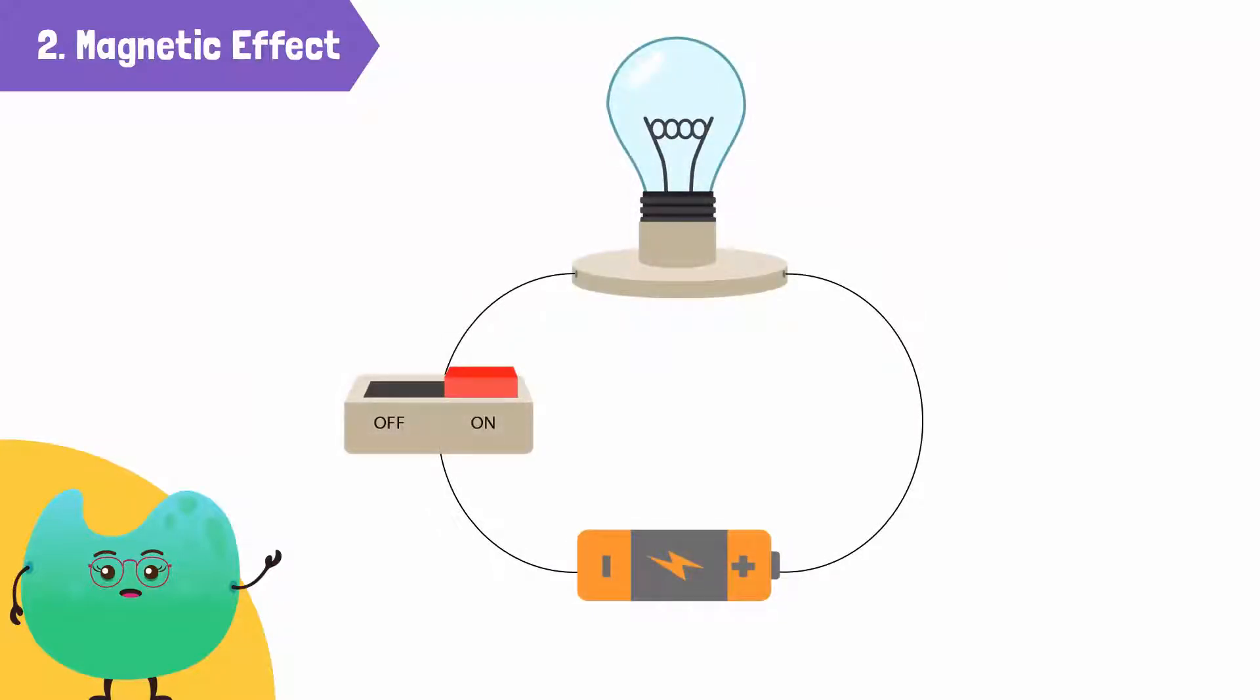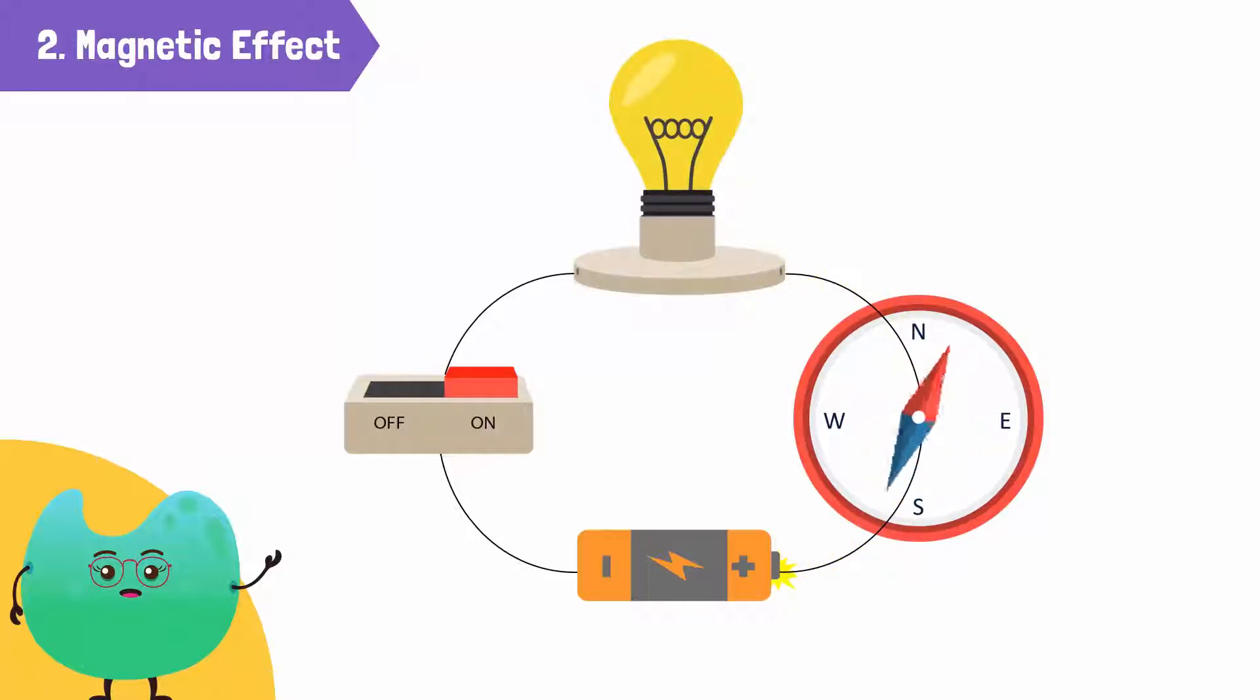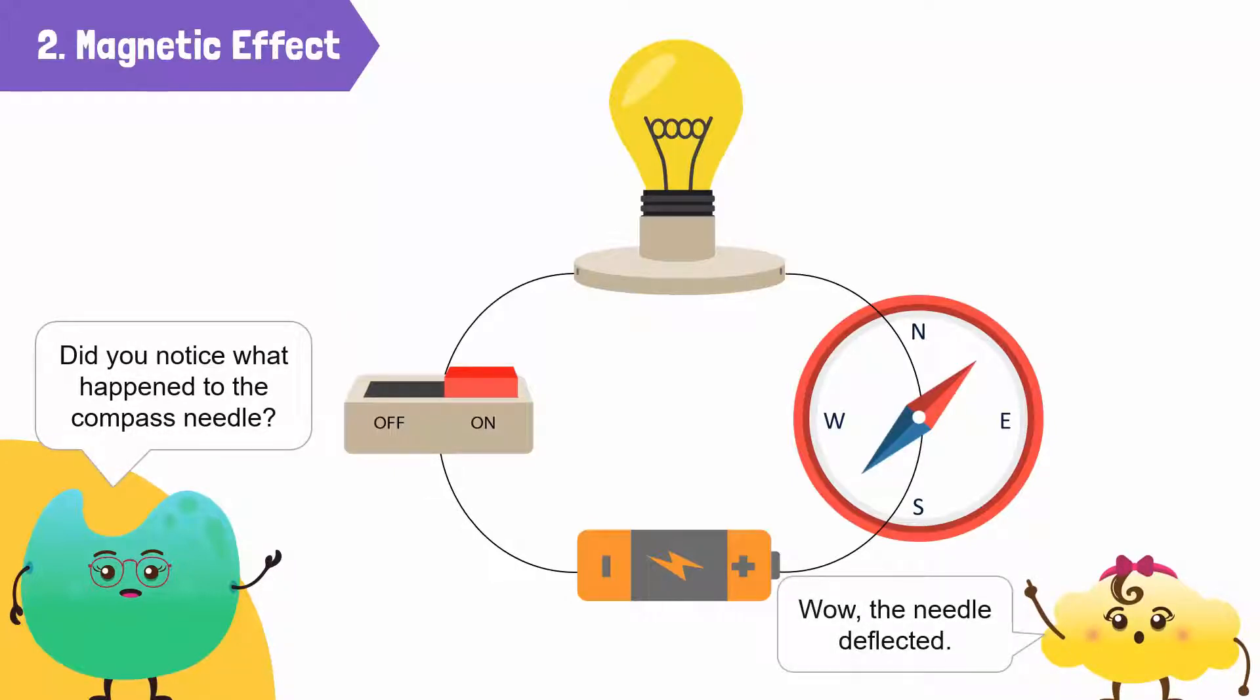Create a circuit with a battery and switch. Now pass the current through the wire, holding the wire on top of the compass. Did you notice what happened to the compass needle? Wow! The needle deflected! This shows that an electric current can also produce a magnetic effect.